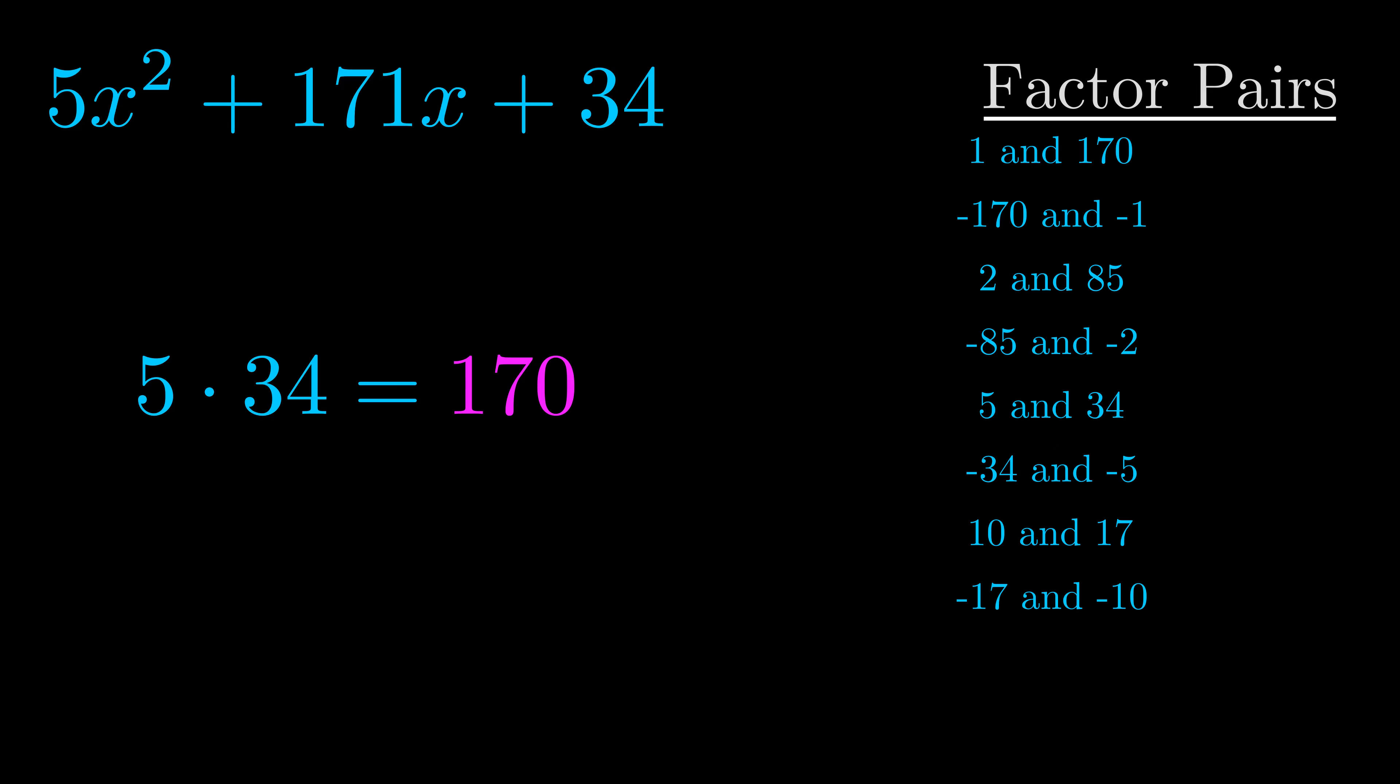The b value is the coefficient on the x term. That's the middle term, the one that we haven't done anything with yet. And really this is the only factor pair that we need.